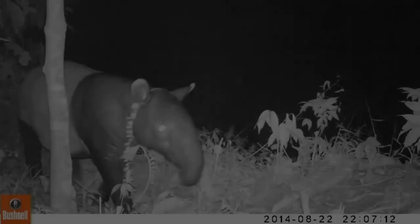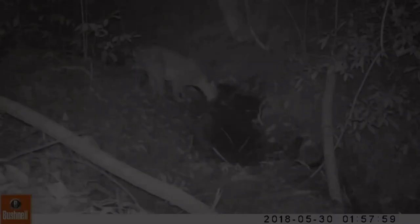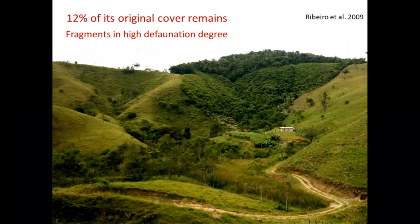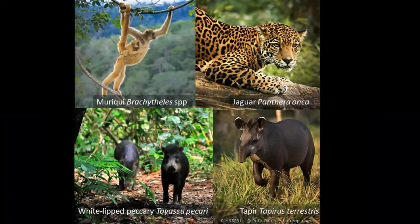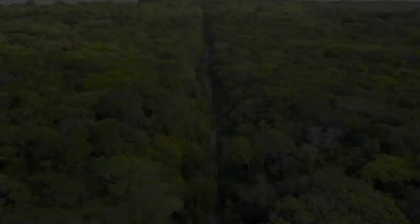Large mammals such as tapirs, white-lipped peccaries, primates, tigers, jaguars, elephants, and large ungulates are disappearing from tropical biomes across the globe. This likely leads to cascading effects that change the whole system forever, but we still need to understand such consequences to mitigate negative impacts and improve conservation actions. Here in the Brazilian Atlantic Forest, a long-term experiment was installed 10 years ago to simulate defaunation in the rainforest, investigating above- and below-ground changes caused by the loss of large mammal populations in multi-trophic diversity, communities, structure, carbon and nutrient dynamics.